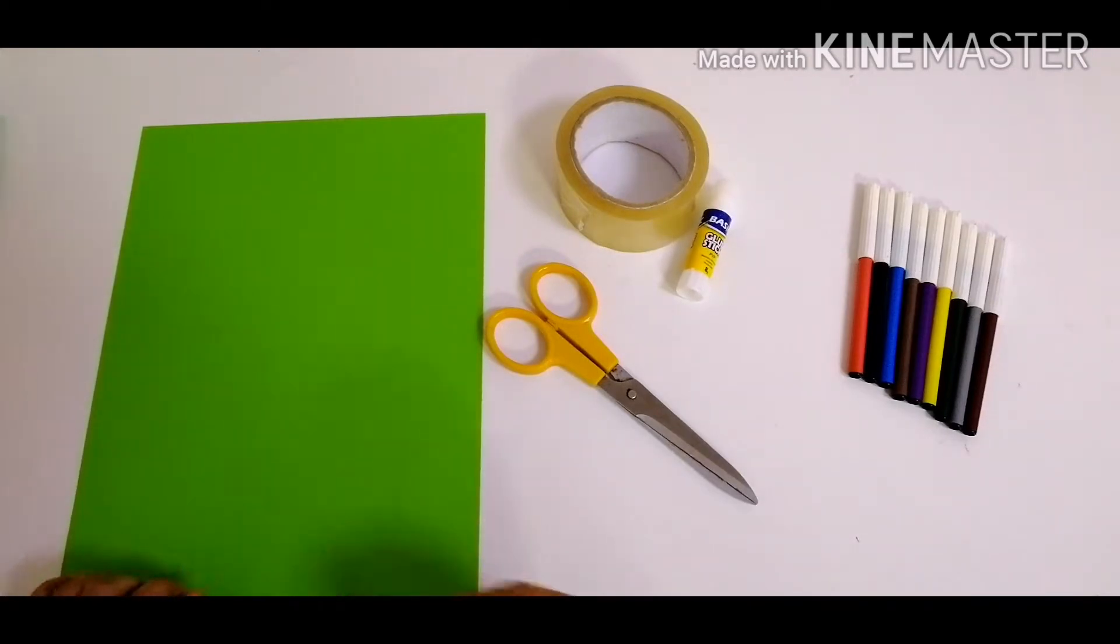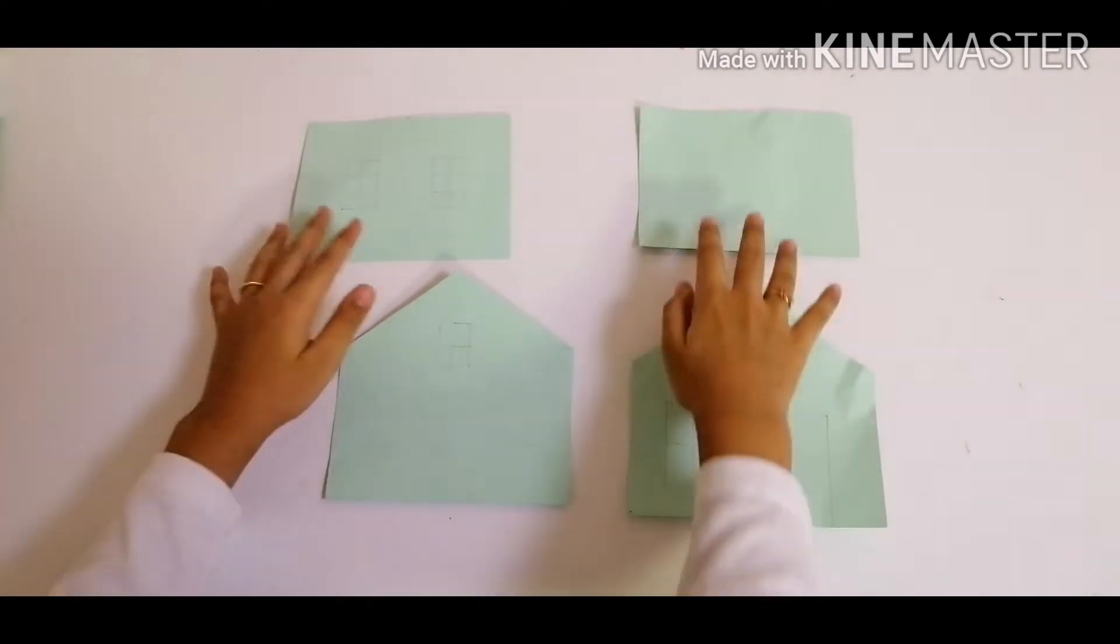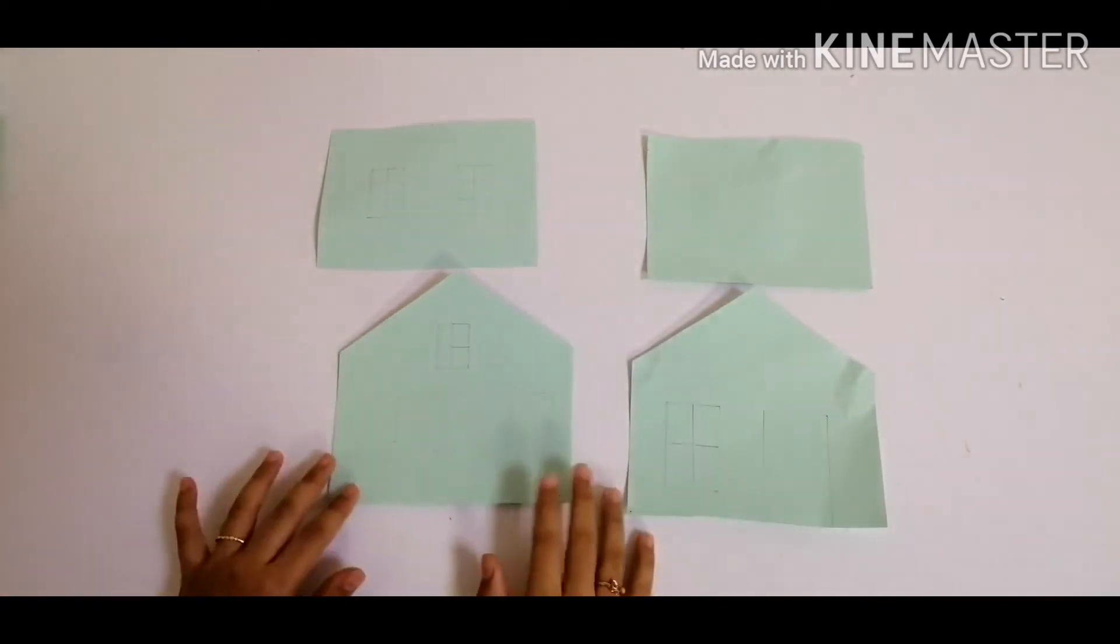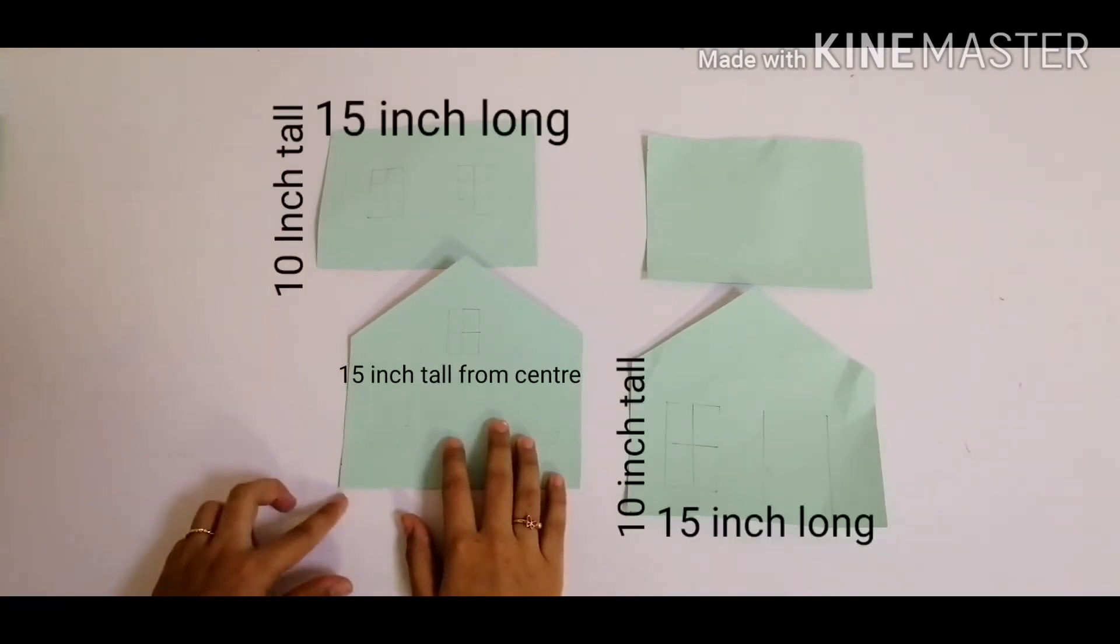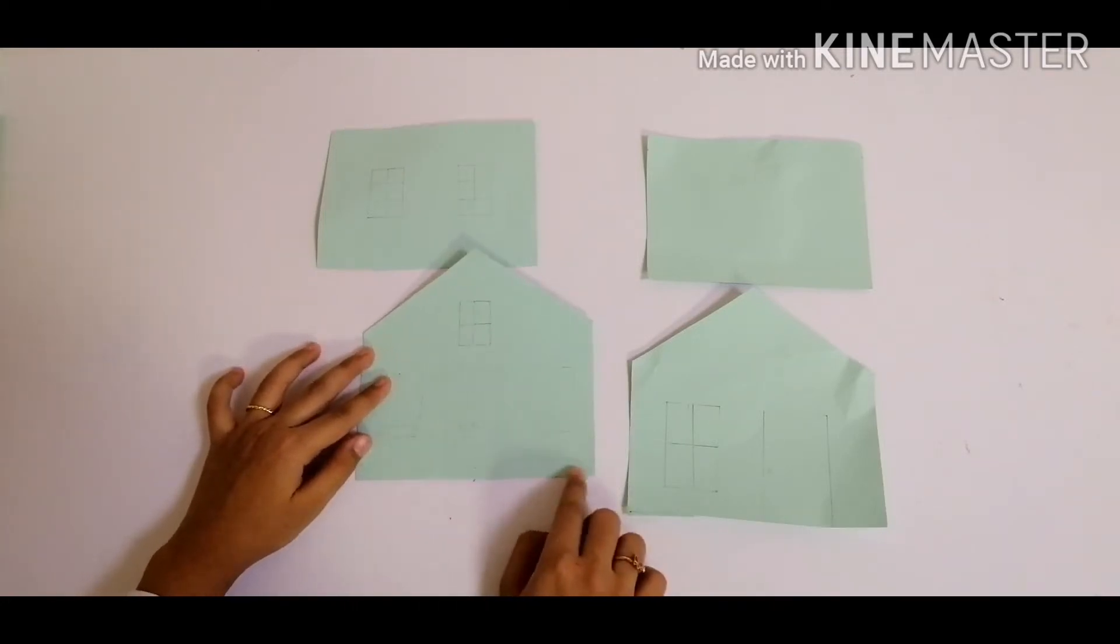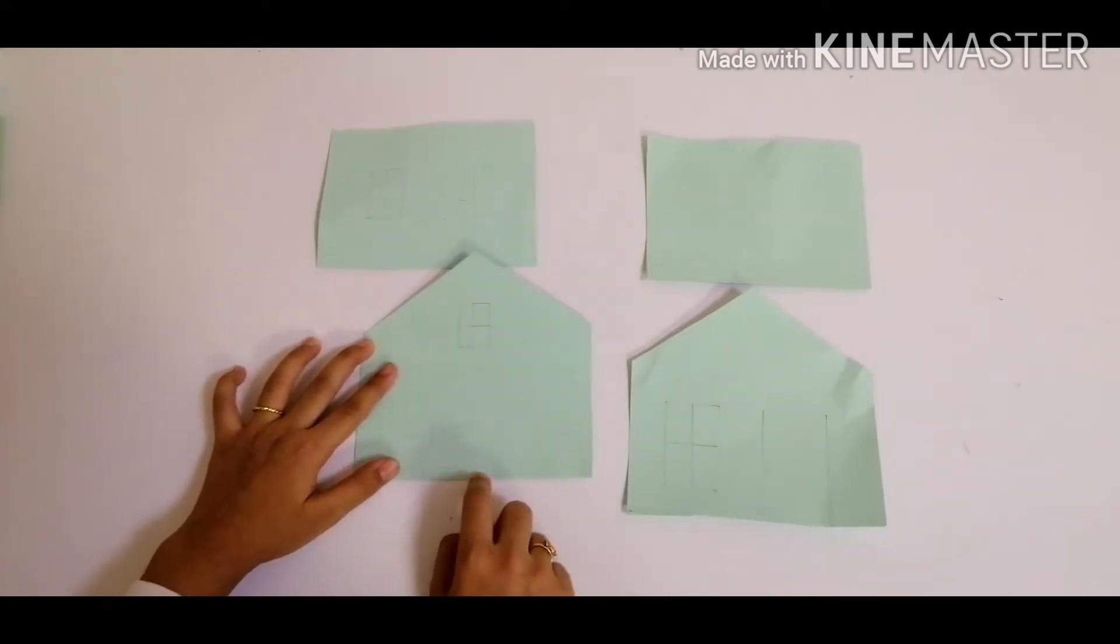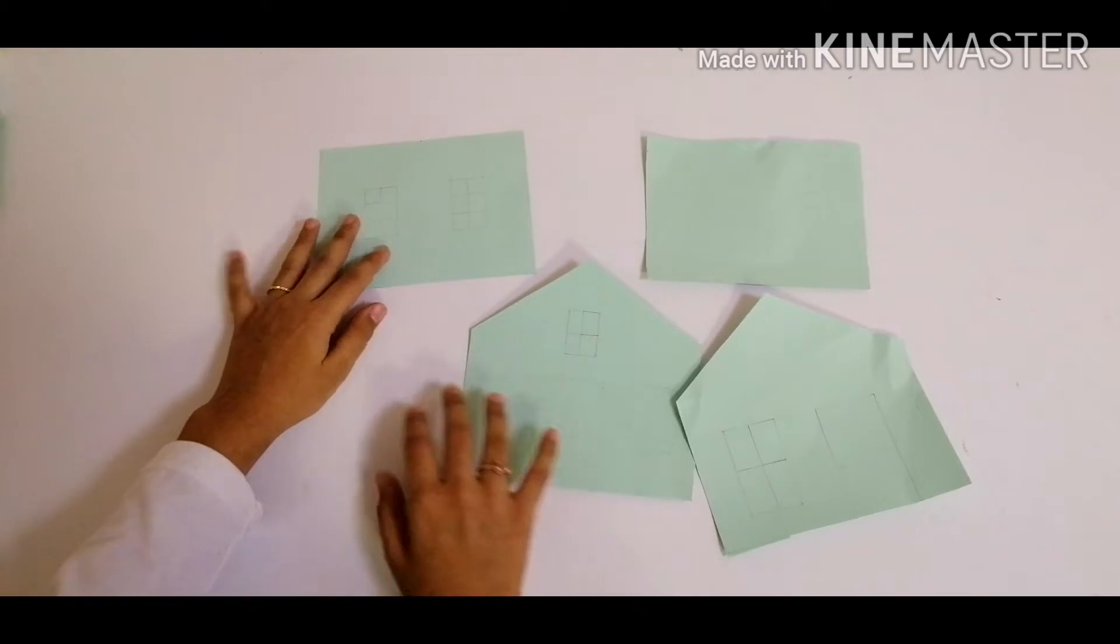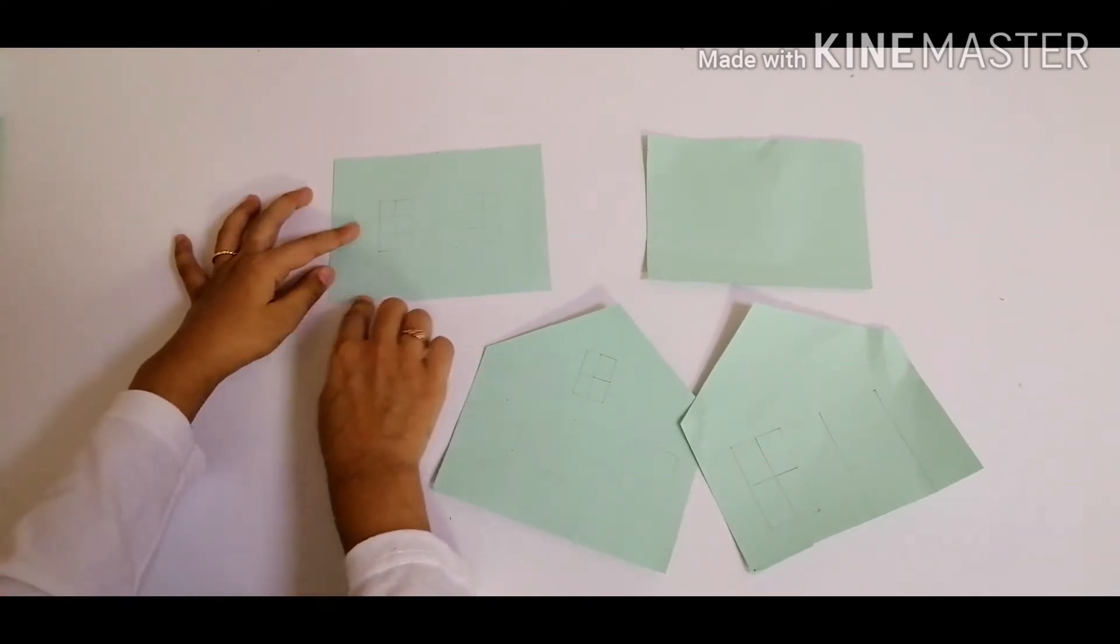So here we have two pentagons and two rectangles. The pentagon is 10 inches tall and 15 inches long, and from the center it is also 15. The rectangle is 10 inches tall and 15 inches long.